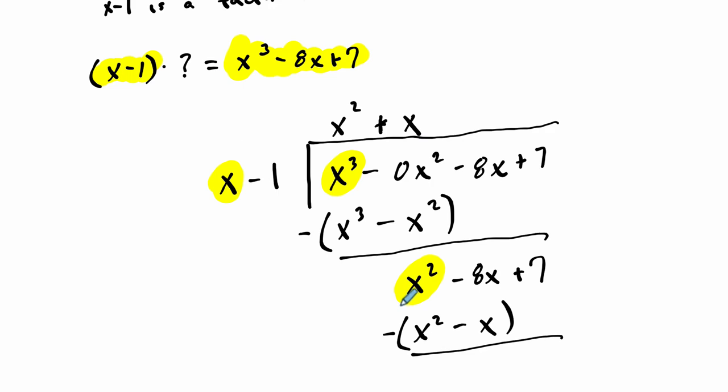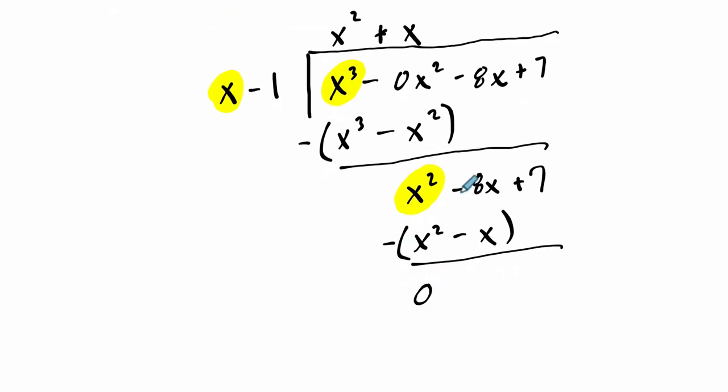And there's still a remainder. X squared minus itself is 0. But negative 8X minus negative X is negative 8X plus X or negative 7X. 7 minus nothing is 7. So this is our remainder. But we can still divide our divisor into it.